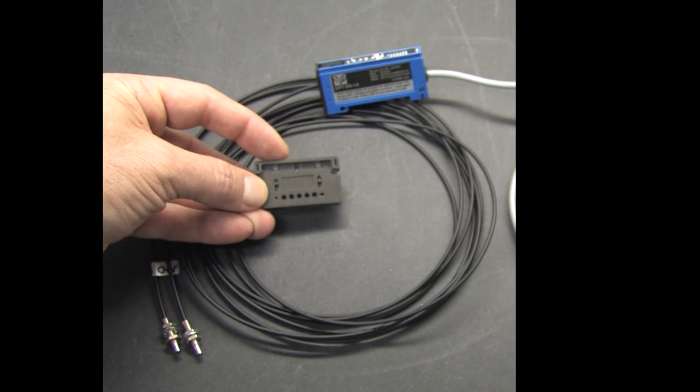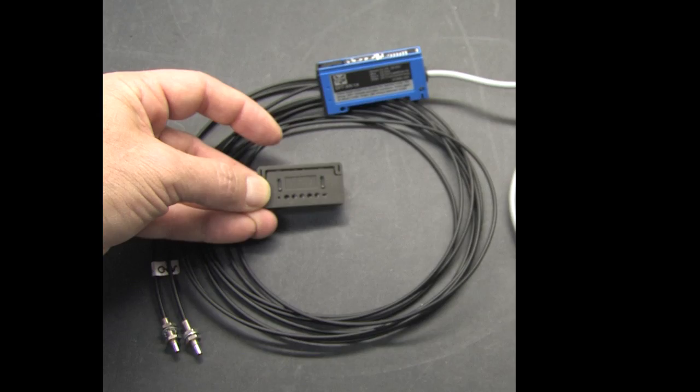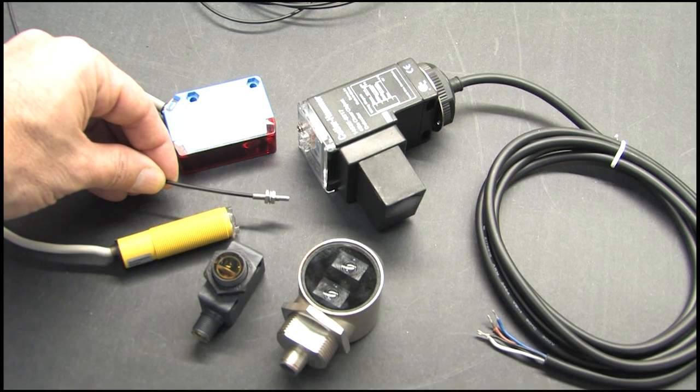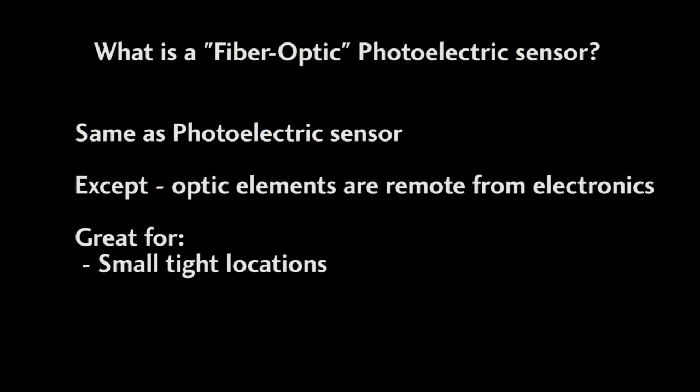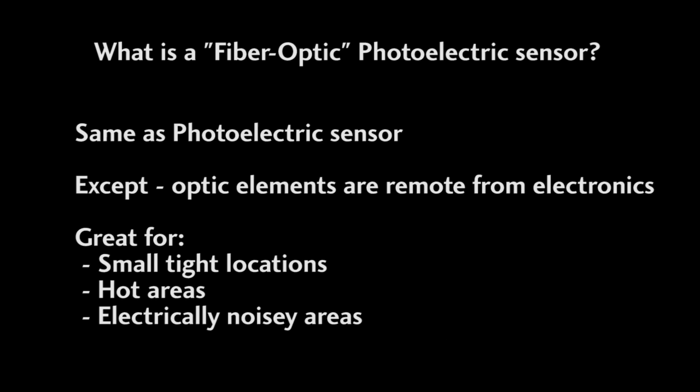These sensors even come with a special tool for cutting the fiber optic cables. You can get a feel for just how small these things are when I hold them right next to the regular photoelectric sensors. As you can see, these are great for squeezing into small tight installations where you can't fit traditional sensors. They are also great when you have an environment that might mess with the electronics like high heat or electronic interference, because with these you can put the electronics out of the way and only expose these passive optics to the hostile environment.